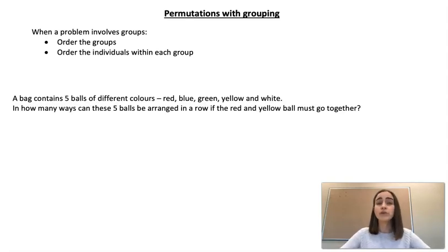So our first example says that we have five balls of different colours: red, blue, green, yellow and white. We want to know how many ways we can arrange them in a line if our red and yellow balls must go together.